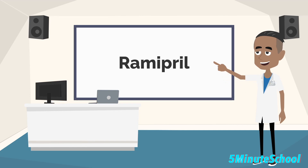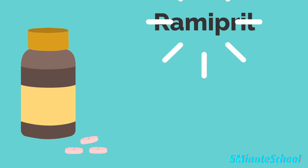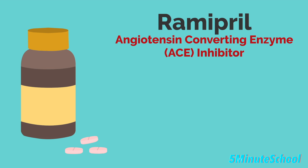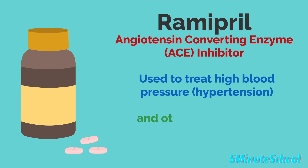In today's video we're going to be talking about Ramipril, covering its uses, the pharmacology, side effects and dosage. Ramipril is an angiotensin converting enzyme inhibitor, a class of medication commonly prescribed for managing high blood pressure, otherwise known as hypertension, and other cardiovascular conditions. We're going to talk about the mechanism of action and other important details.